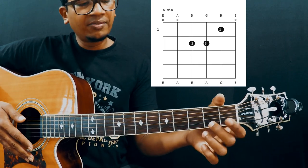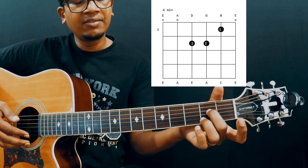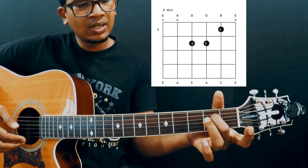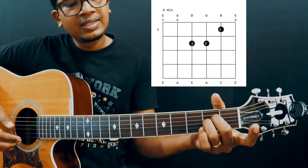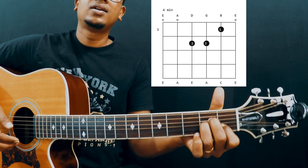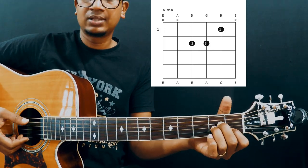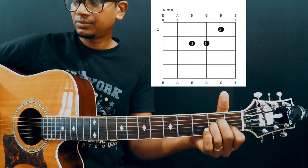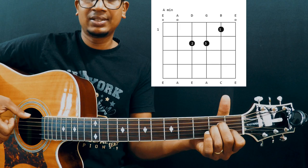So take your middle finger and place it on 2nd fret of the 4th string, your ring finger on 2nd fret of the 3rd string and your 4th finger on 1st fret of the 2nd string. Start from the 5th string, don't have to play the 6th string.